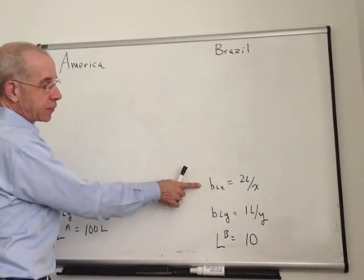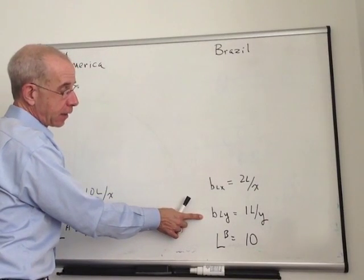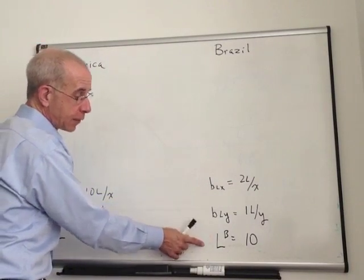Brazil, similarly, we're going to have two workers for every X, one worker for every Y, and they're going to have 10 units.